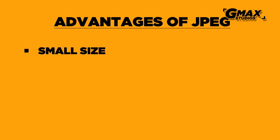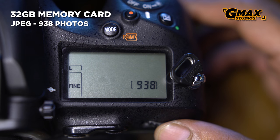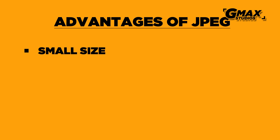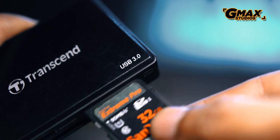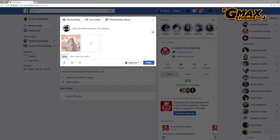So let us talk about the advantages of JPEG first. The JPEG file is extremely small since it is processing the file according to the specifications that you have asked the camera to do, so it throws away the rest of the data making the file extremely small and therefore taking up less storage space on the memory card and on your hard disk. The second advantage is that JPEG files are ready files in the sense that you don't have to do anything with them — you don't have to process them in any software, so they are just ready to send to whoever you wish or upload them to various social media networking sites.